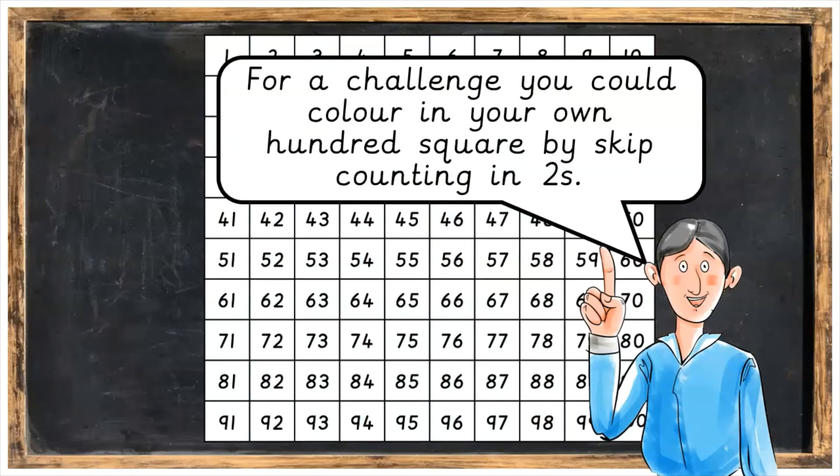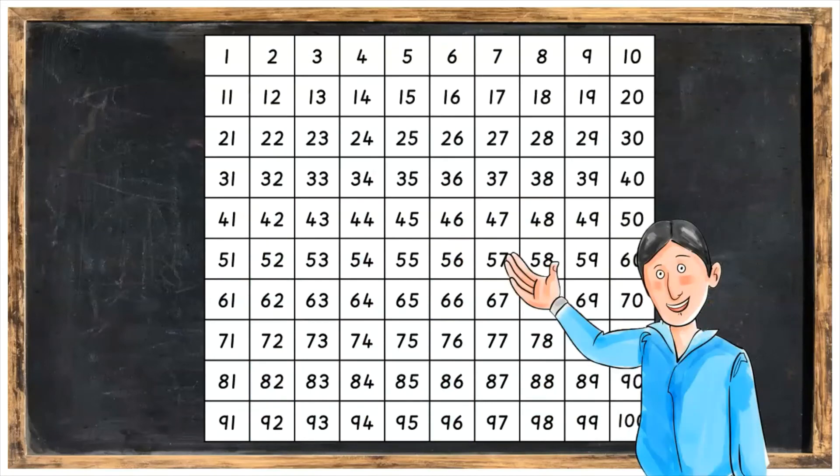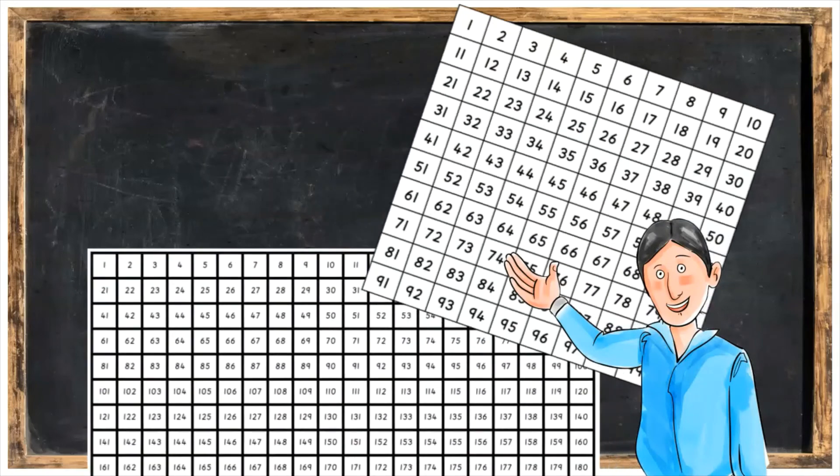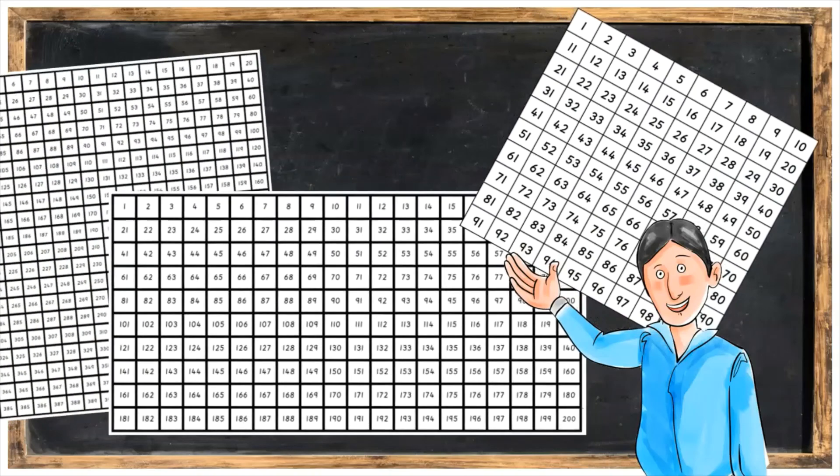For a challenge, you could colour in your own hundred square by skip counting in twos. You might even like to skip count even further to 200 or 400 for a challenge.